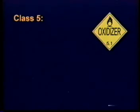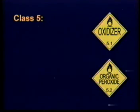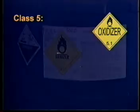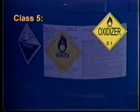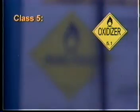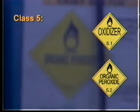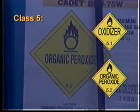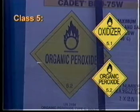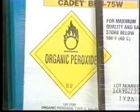Class 5 is divided into Division 5.1 oxidizers and Division 5.2 organic peroxides. Products in Division 5.1, such as hydrogen peroxide, generally yield oxygen readily and cause or contribute to the combustion of other materials. Products in Division 5.2, organic peroxides, include materials such as benzoyl peroxide, which may be thermally unstable compounds. Under certain conditions, an organic peroxide can begin to chemically decompose by itself, producing heat or combustion.